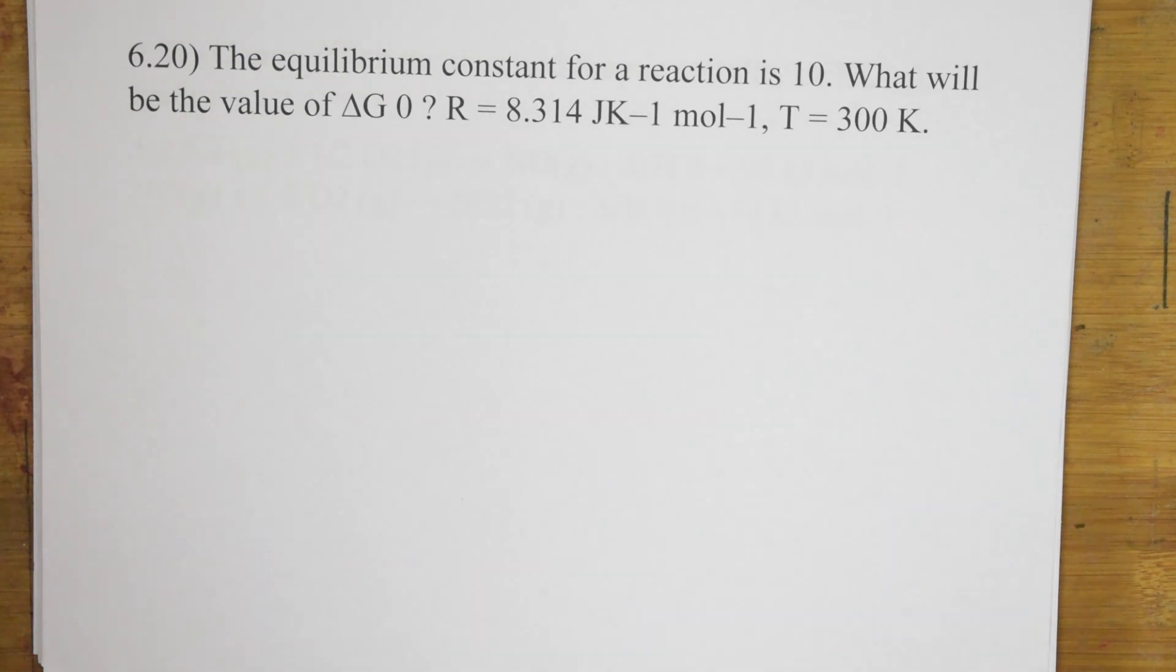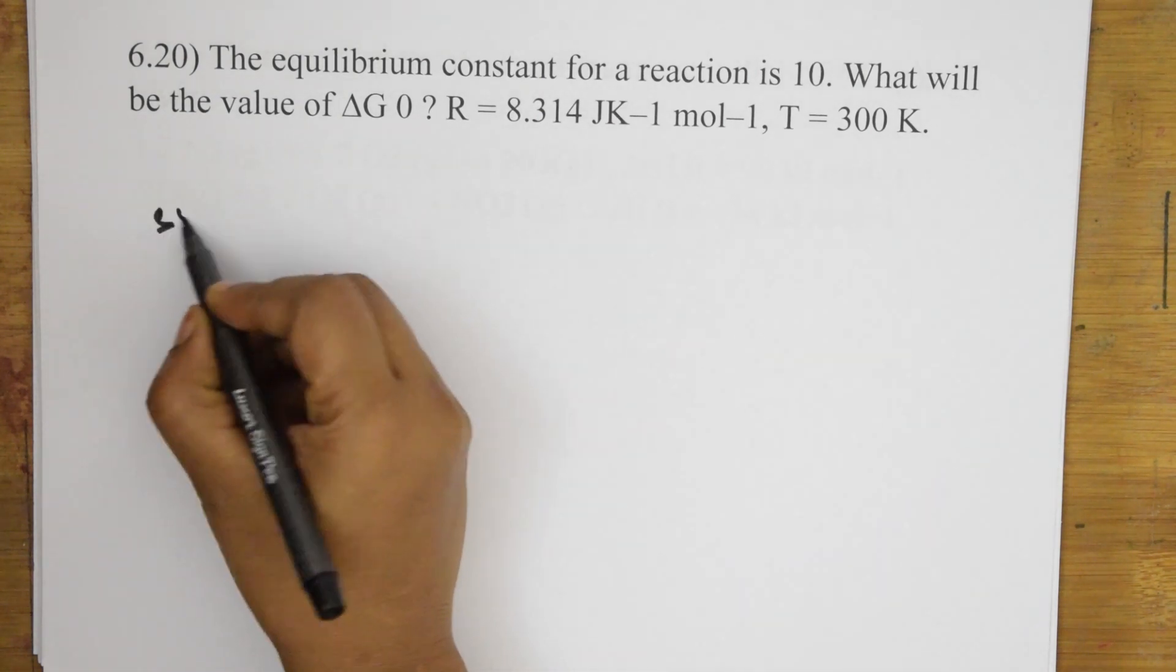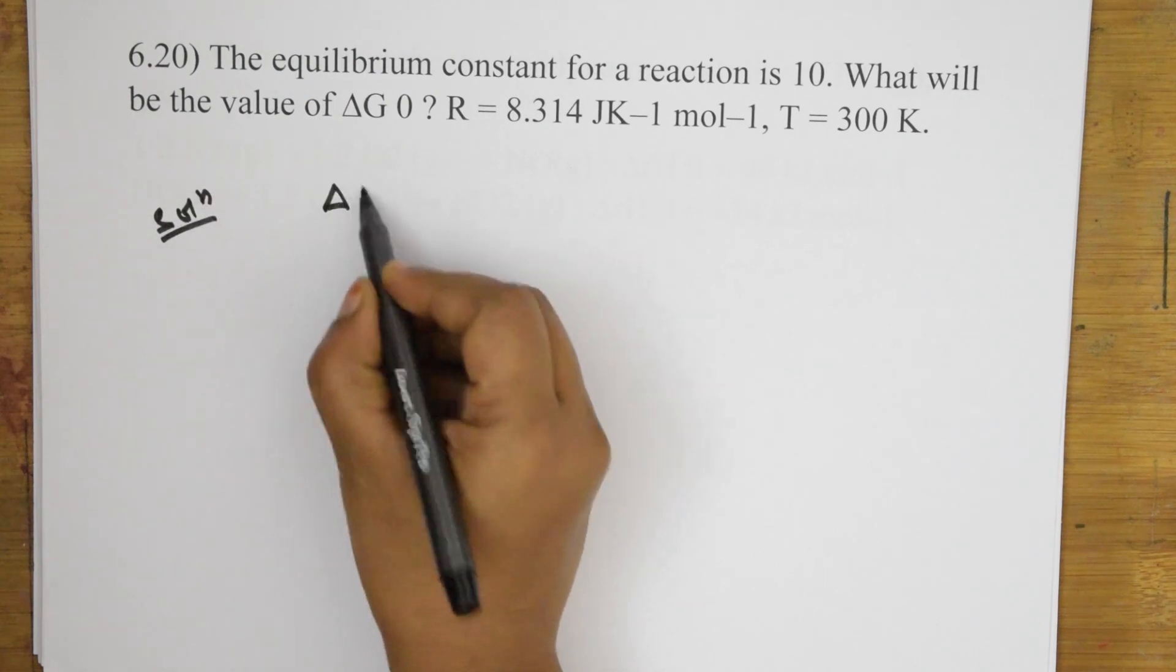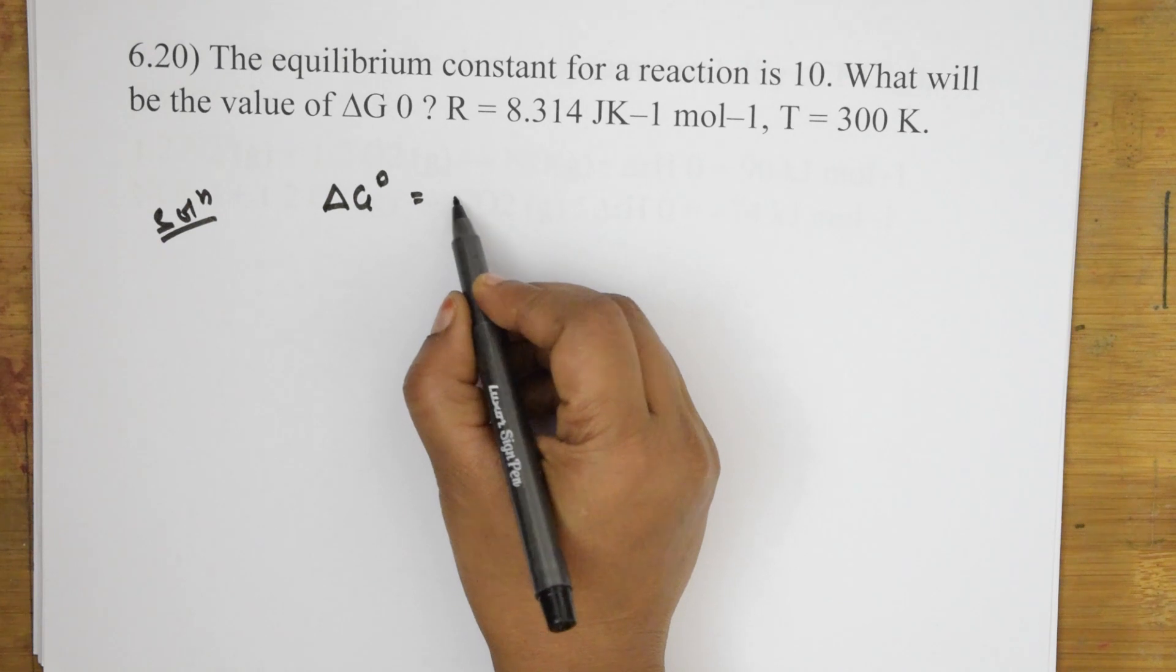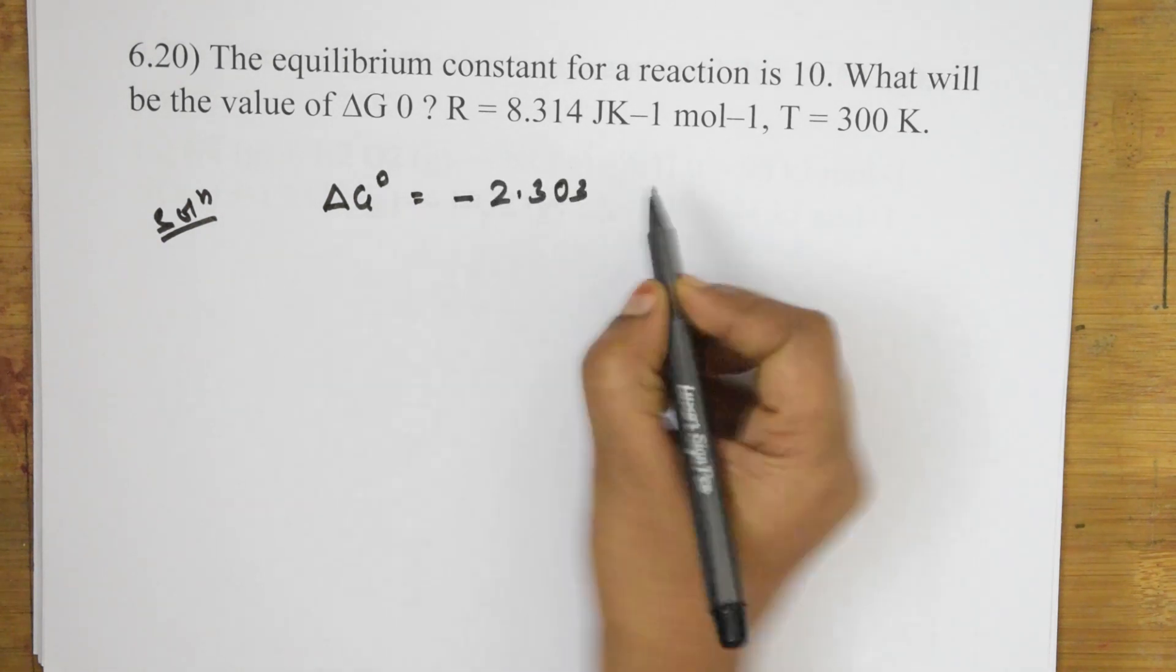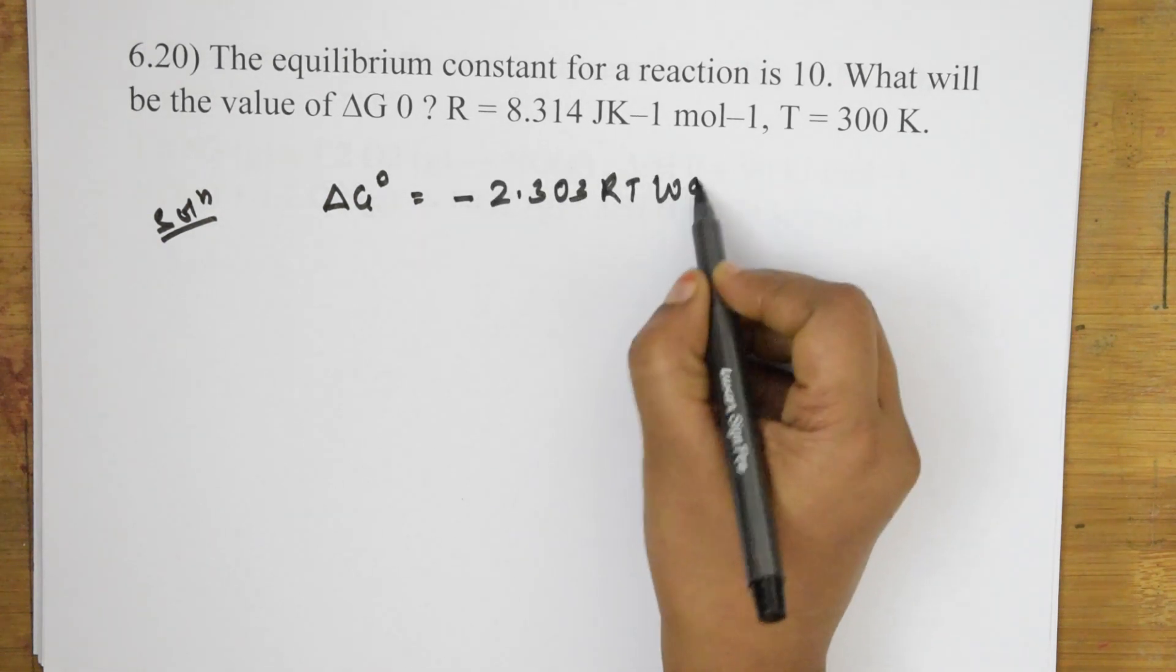So here, I should calculate the equilibrium constant. What is the formula which we have learnt? We have learnt according to this, the formula is delta G naught at standard equilibrium at constant value, this one is equal to 2.303 RT log Kc.